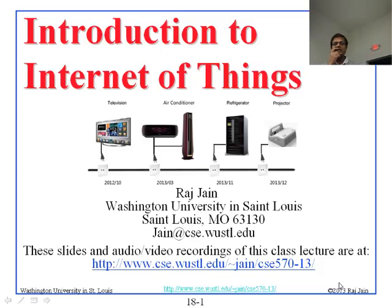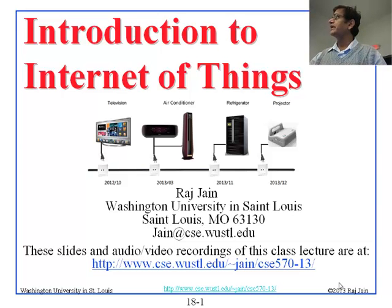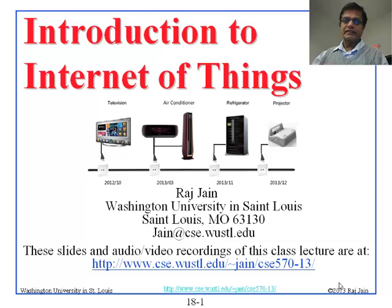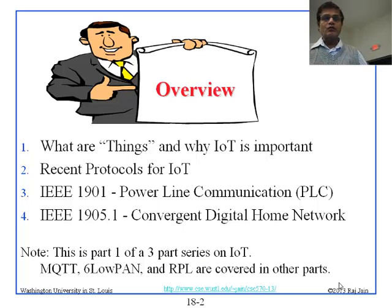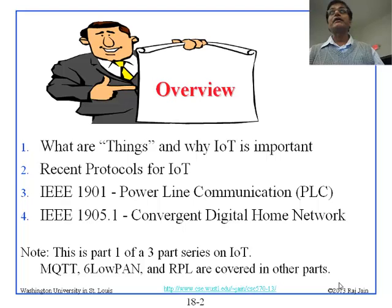Today we are going to talk about Internet of Things. As you can see from the title slide, the things consist of several things which already happen: television is already internetted, air conditioners, refrigerators, projectors, many of these things. We will talk about what are the things and why IoT is important, what is new in IoT, basically what are the new networking protocols. In particular there is 1901 and 1905 — those two protocols we will discuss today.